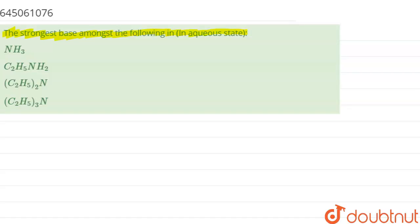This is an aqueous solution, and in the case of NH3, C2H5NH2, (C2H5)2N, and (C2H5)3N, the order which comes out to be is...